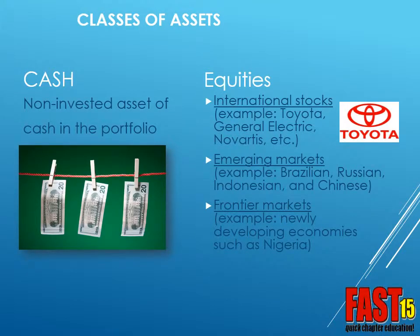There are different classes of assets. Cash is one — it is a non-invested asset waiting to be used for a future investment. Then there are equities, which include all types of stocks, such as Toyota, General Electric, and Novartis, to name a few. We usually think of investments as stocks and bonds, but in today's world it is more complicated. Stocks, or equities, include U.S. companies, international companies, emerging markets, and frontier markets.